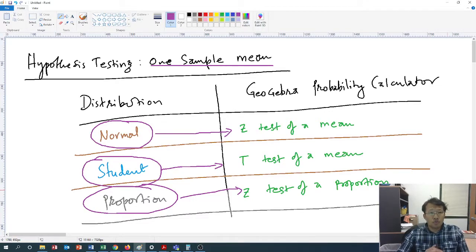In this video we'll be working on hypothesis testing for one sample mean, and this time we'll be going for a problem which uses student's t-distribution. For that, we would go for a t-test of mean.